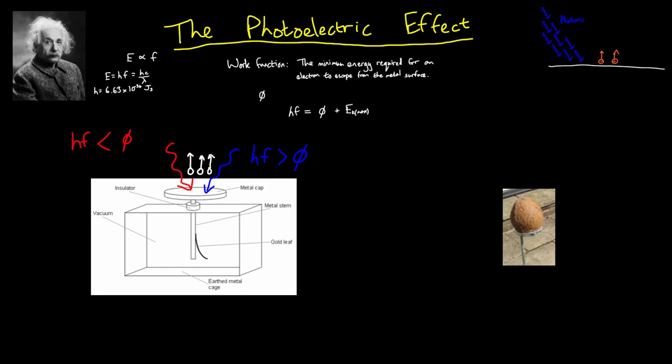An analogy for this is a fairground coconut shy. You could throw hundreds of table tennis balls that are like low energy red photons at the coconut, but it will not move. However, throw one bowling ball like a high energy ultraviolet photon at it and the coconut will be dislodged.